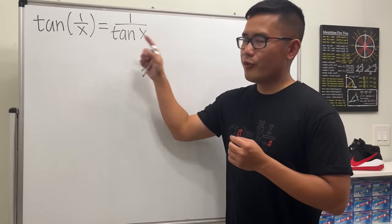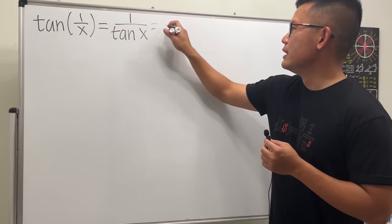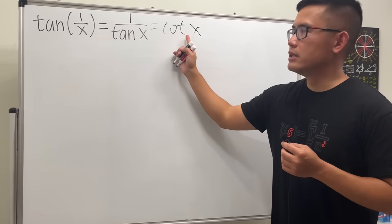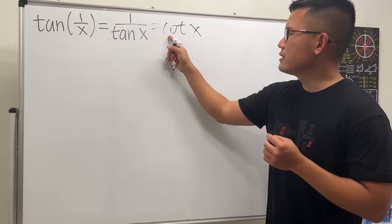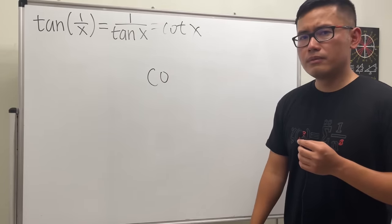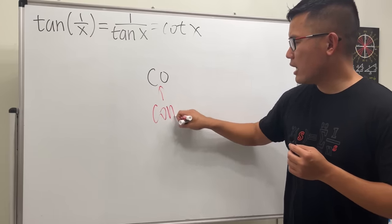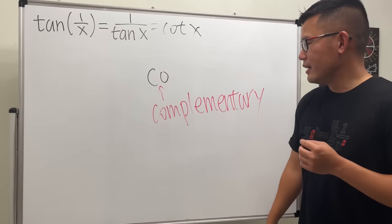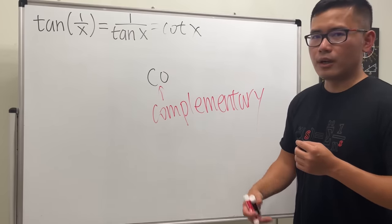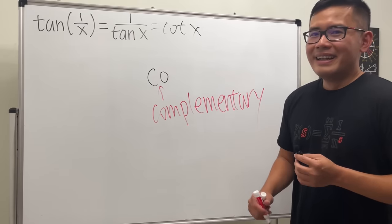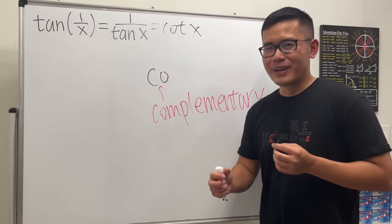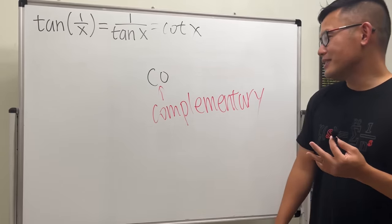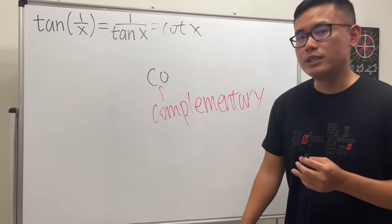First, we see we have one over tangent x — let's rewrite that as cotangent, so cot(x). Now if you look at this, we have cotangent. Have you ever wondered what the prefix 'co' means? This actually represents 'complementary.' In the trigonometry world, when you have two angles that add up to 90 degrees, they are complementary angles. But since we're all adults now, we're not going to use degrees — we'll say π over 2.